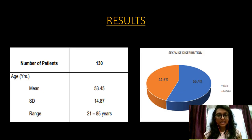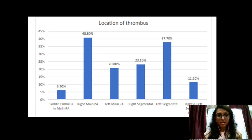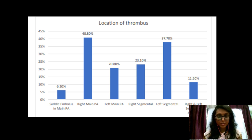Of the 130 patients enrolled, the mean age was 53 years and 55% were male. The most commonly involved vessel was the right main pulmonary artery. In 6% of patients, all segmental branches were involved — that is, a saddle thrombus involving all 16 segmental arteries.